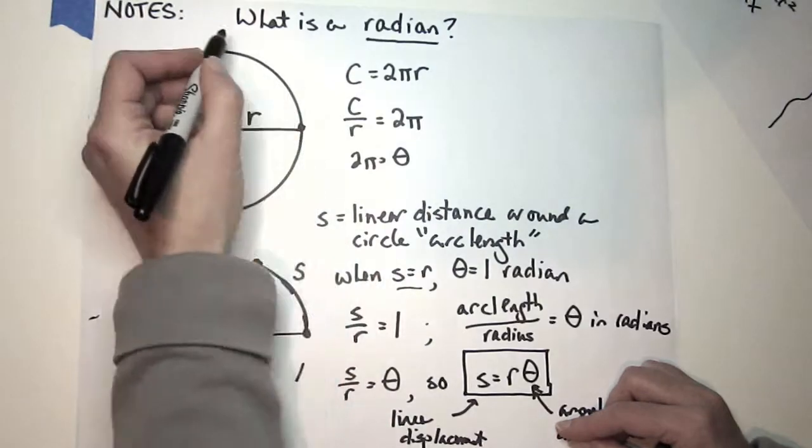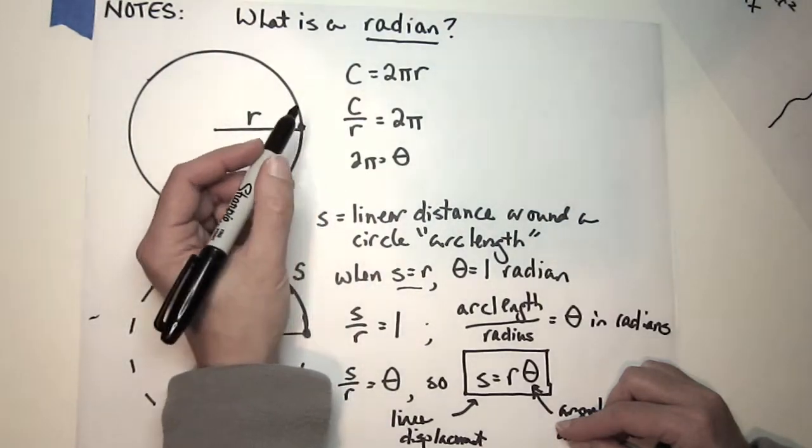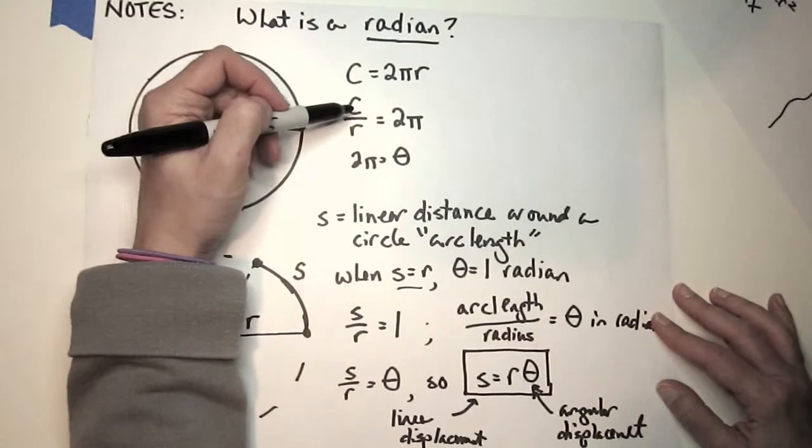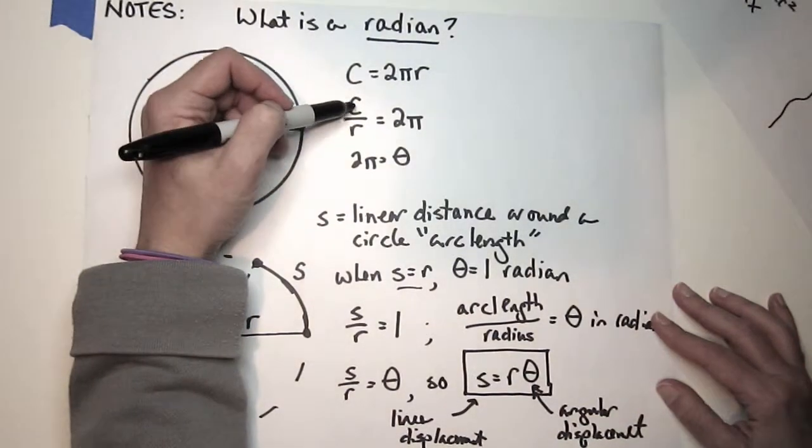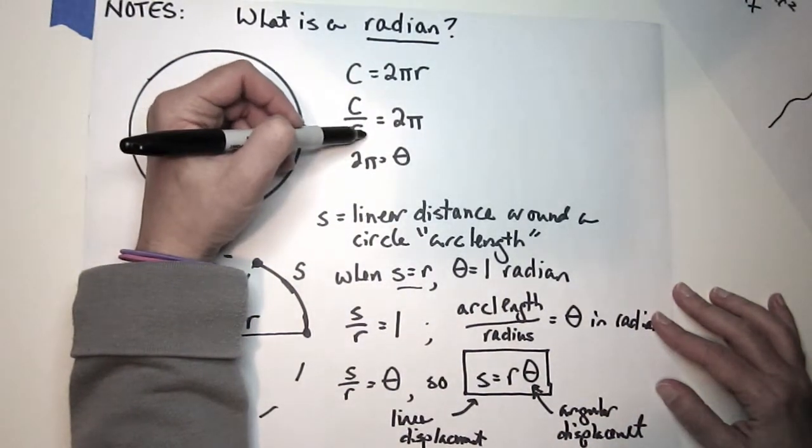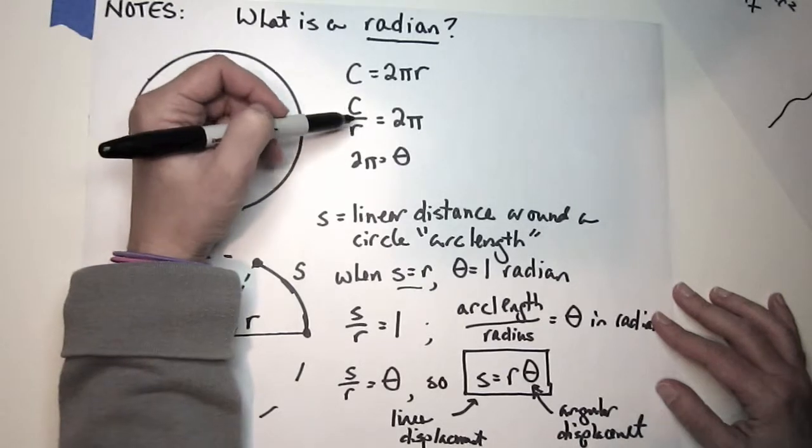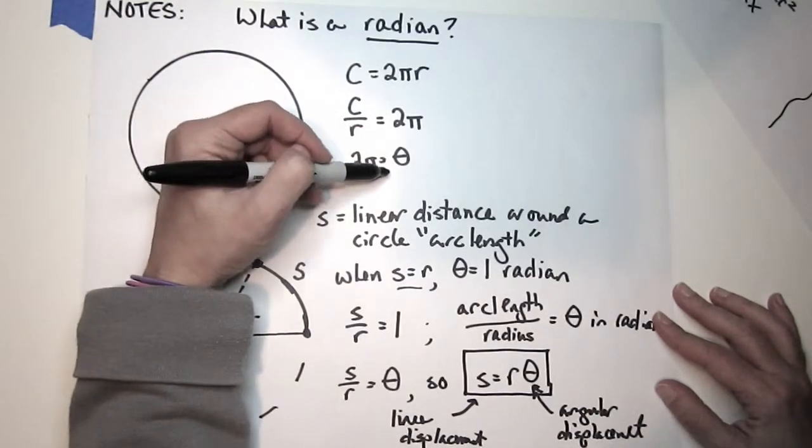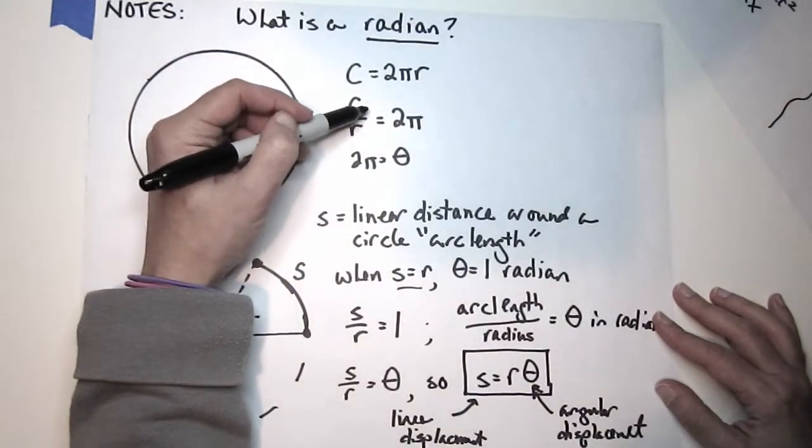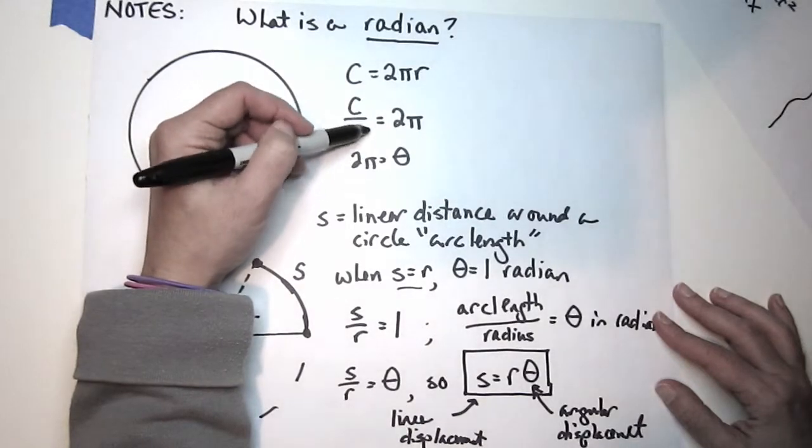In this case, 2π radians is once around. One funny thing about radians: if you look at the actual units, circumference is measured in meters, radius is also measured in meters. So there's no actual dimension here because we have meters divided by meters. The units cancel.